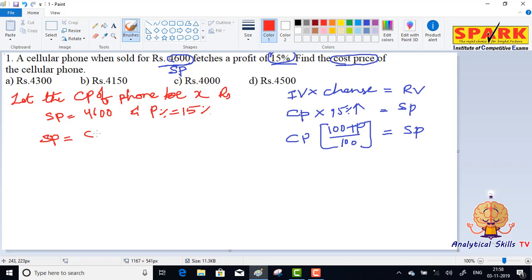...cost price into 100 plus profit percent by 100. Selling price is given as 4600 equals cost price x into 100 plus profit percent 15 by 100. So 4600 equals x into 115 by 100.